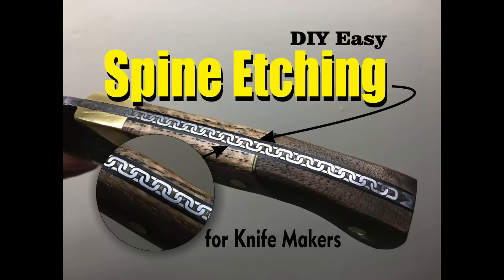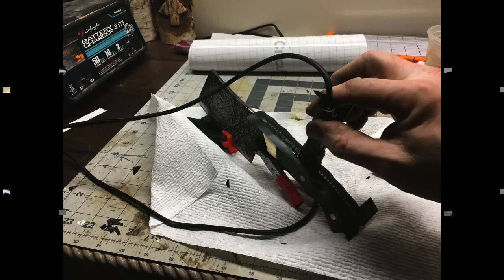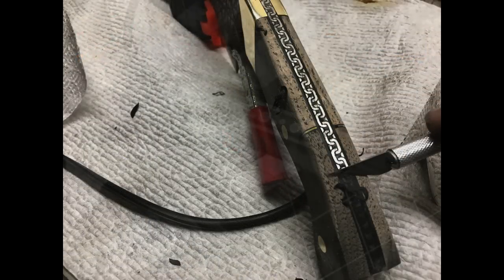Welcome to DIYEasyCrafts.com. Easy knife spine metal etching using salt water, a 12-volt battery charger, and self-adhesive vinyl. I cut out my vinyl decals or stencils with a Silhouette Cameo Craft vinyl cutting machine.